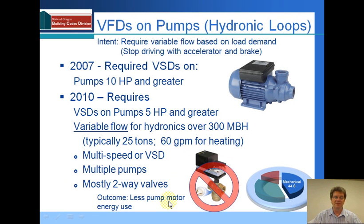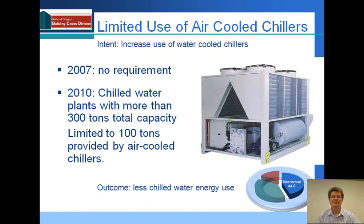Even without a variable speed drive or multiple speed pumps — and the smaller ones don't require that — two-way valves will reduce the flow and reduce the energy use by that pump. Air-cooled chillers are now restricted in use. Water-cooled chillers are much more efficient as they use the evaporative effect of water to cool the condenser water going through the system.